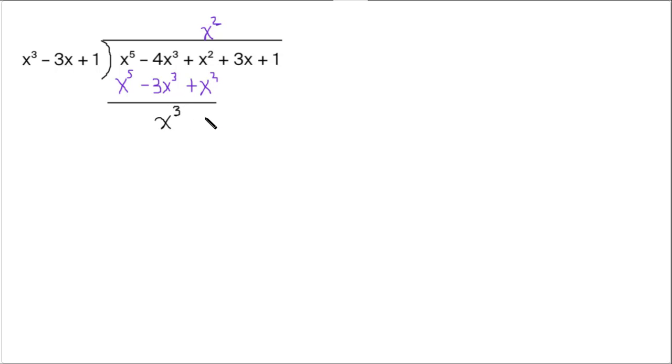And x squared minus x squared is nothing. So we drop the 3x down. And actually, we're going to need to drop the 1 too. And that's because we're going to get the like terms with this.